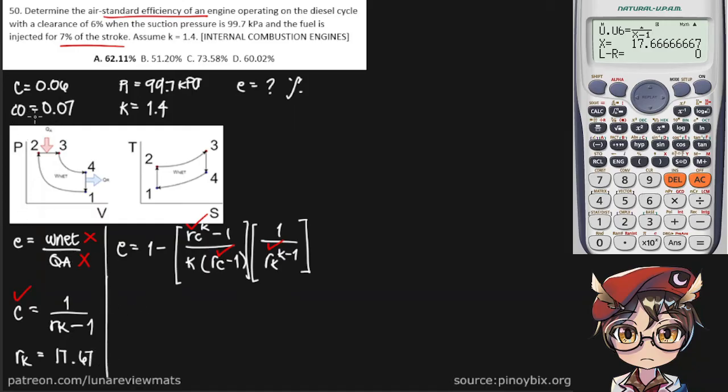And we can do the same for our percent cutoff, which is given by C plus CO over C. This is R sub C. We know these, so again, direct substitution in our calculator. 0.06, 0.07, 0.06 again, and we get 2.17 as our cutoff ratio.